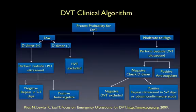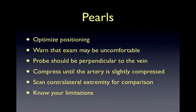DVT ultrasound is incorporated into the DVT clinical algorithm suggested by ASAP. Patients with low pre-test probability for DVT as determined by Wells criteria and a positive D-dimer should have an emergency bedside ultrasound for DVT performed. If negative, patients should have a repeat study in 5 to 7 days. Patients with moderate to high pre-test probability should also have an emergency bedside ultrasound performed; if negative and D-dimer positive, patients should have a confirmatory study and/or repeat study in 5 to 7 days. Pros include optimizing patient positioning, using a high-frequency linear probe perpendicular to the vein, applying adequate compression, scanning the other extremity for comparison, and utilizing the DVT clinical algorithm for medical decision-making.